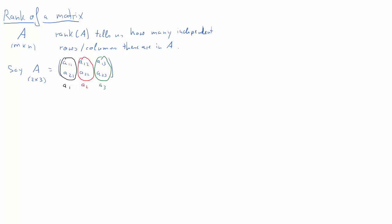Each of these columns is a vector containing two pieces of information. We can now ask the question of how many linearly independent columns there can be in this matrix A — there are three columns, so how many of these can be linearly independent? Let's start by visualizing this problem in a two-dimensional coordinate system, two dimensions because each of our columns has two pieces of information.